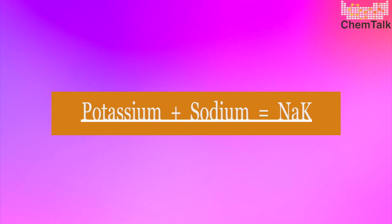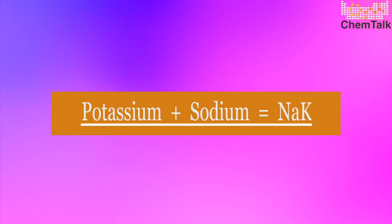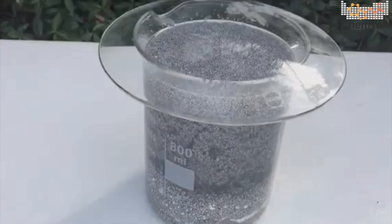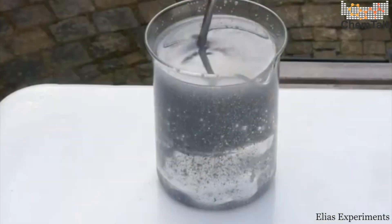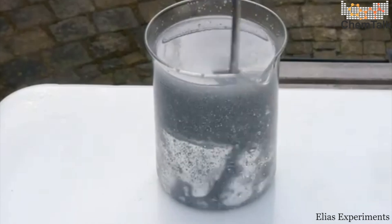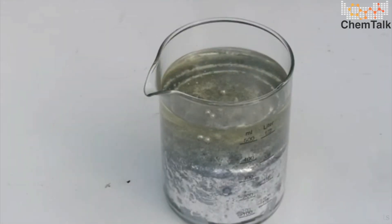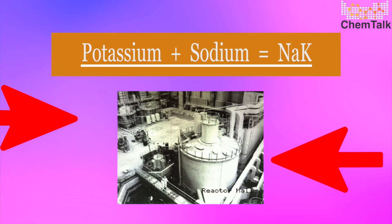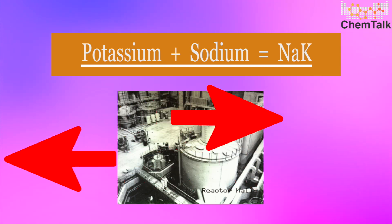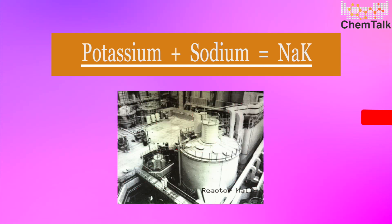When potassium reacts with sodium, it can form an alloy, NaK. NaK can be useful in acting as a coolant in fast neutron nuclear reactors, serving as a heat transfer system that regulates the reactor's temperature.